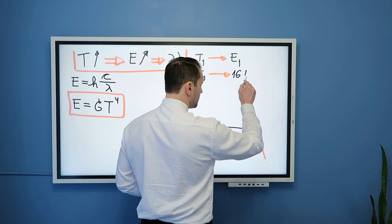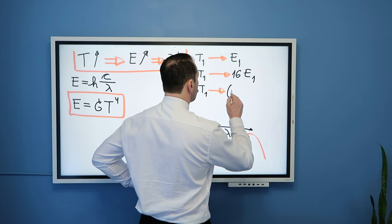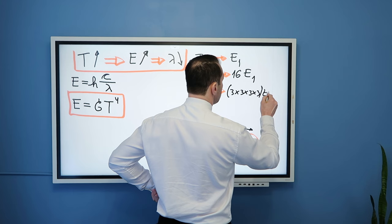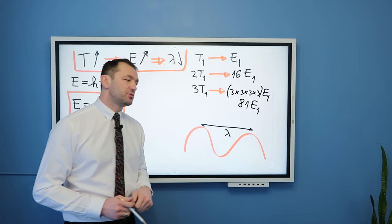I triple temperature of my object. You can see from here that the energy output will be 3 times 3 times 3 times 3 energy E1. And I believe if you multiply this, you will get 81 E1. That's the consequence of this great Stefan-Boltzmann's law.